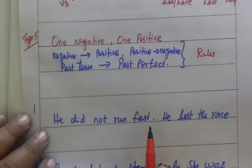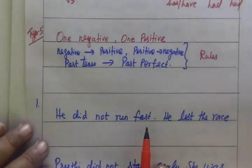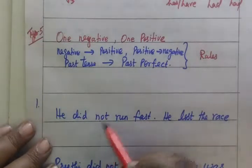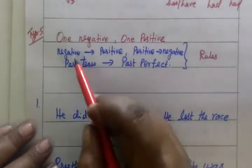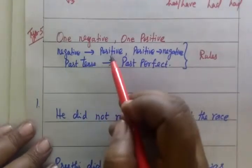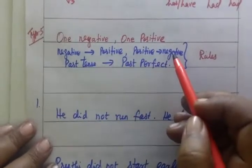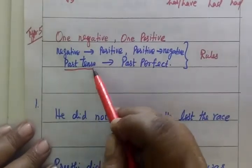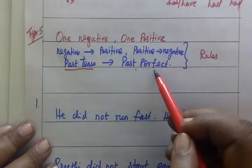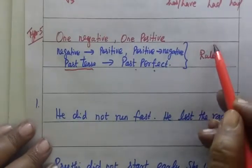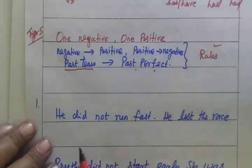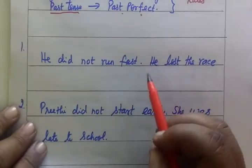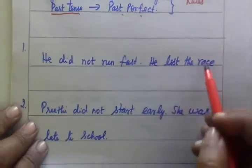Now the next type is: one negative, one positive. Then: negative, positive, positive, positive — and positive, negative, negative. If the past tense becomes past perfect, we have past perfect. Now you will see the sentence: He did not run fast. He lost the race.